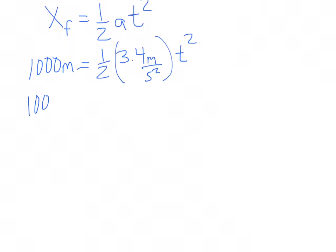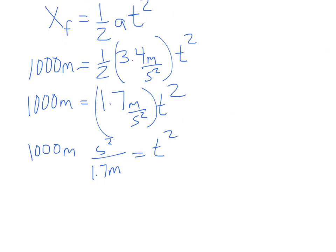So I'm going to work this out here. And I get 1,000 meters is equal to 1.7 meters per second squared times t squared. Now what I'm going to do is divide this 1.7 meters per second squared to the other side. So I'm left with 1,000 meters times second squared over 1.7 meters is equal to t squared. The meters cancel. And I'm left with 1,000 second squared over 1.7 is equal to t squared.